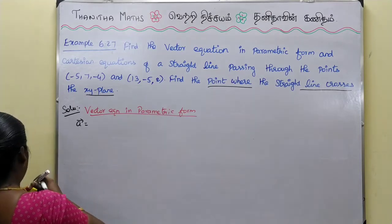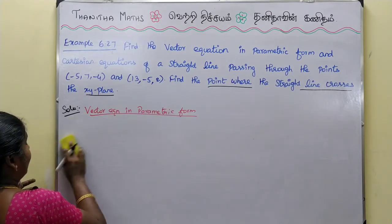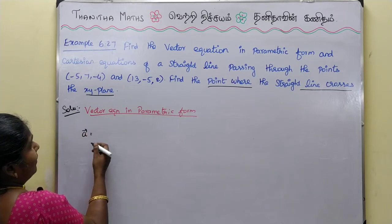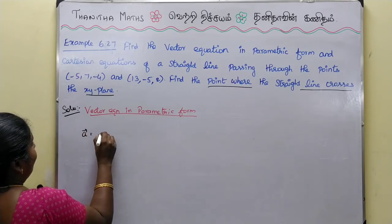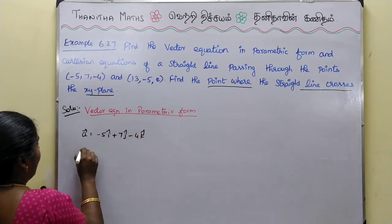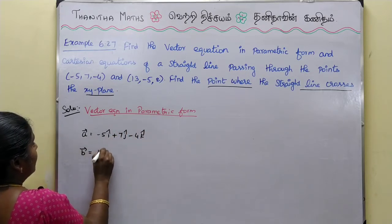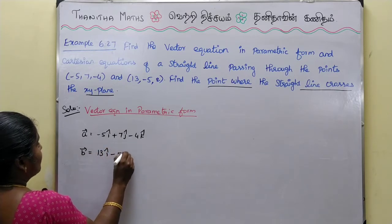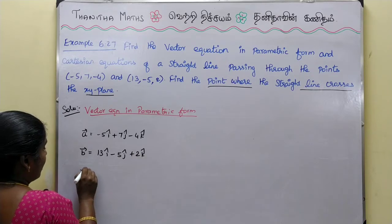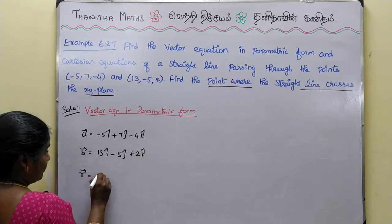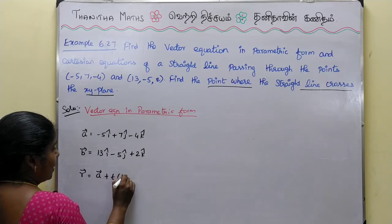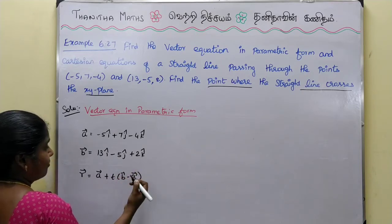The vector equation in parametric form is equal to a vector plus t into b vector minus a vector. Here is the formula.